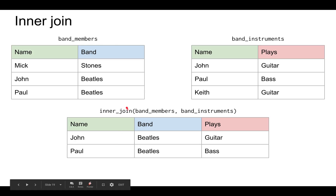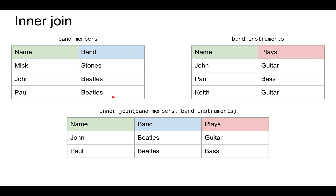The inner join of band members and band instruments is shown here. Notice that Mick, who is from the band Stones, does not appear in band instruments, so Mick is deleted in the result. Similarly, Keith does not appear in band members, so Keith is also deleted. Only John and Paul, who both appear in both tables, are kept. And you can see the result has three columns.